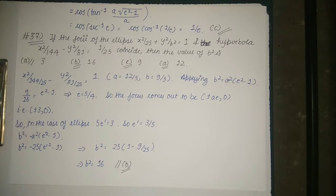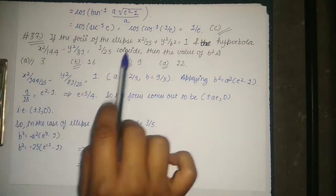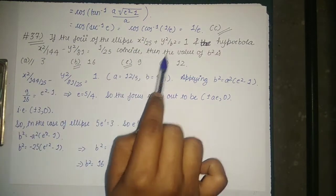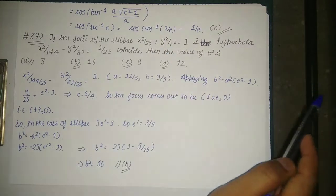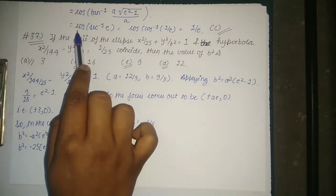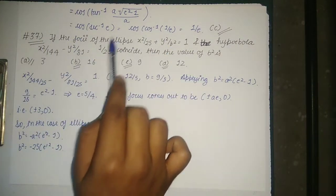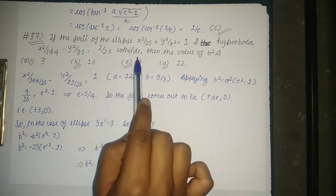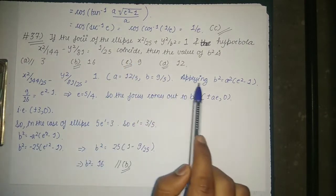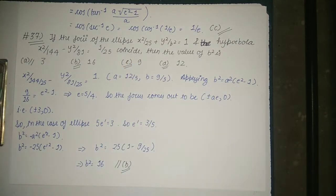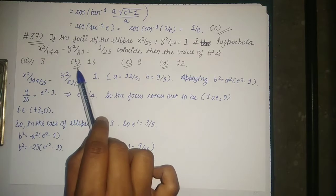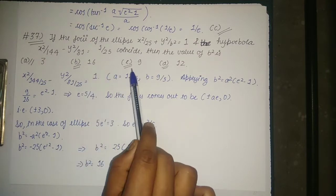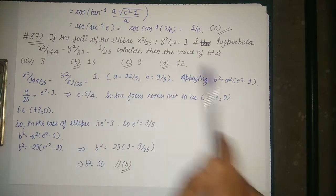Now let's focus on the last portion of the video. If the foci of the ellipse x²/25 + y²/b² = 1 and the hyperbola x²/144 - y²/81 = 1/25 coincide, then the value of b² comes out to be equal to: option A) 3, option B) 16, option C) 9, and option D) 12.